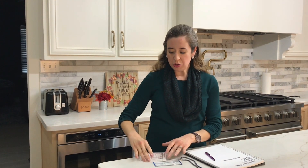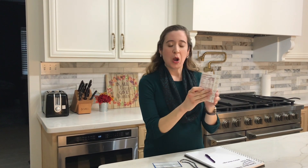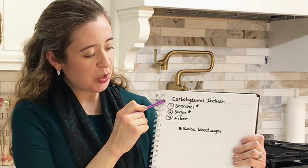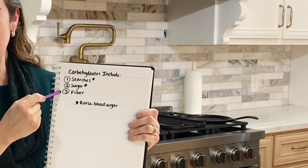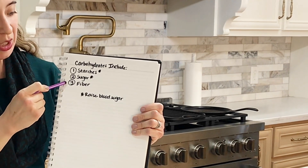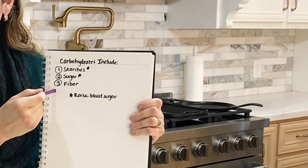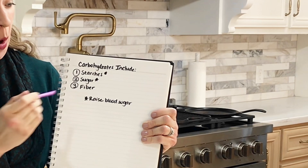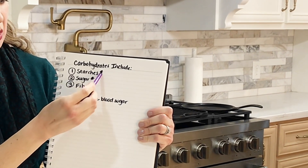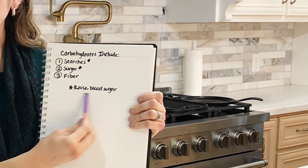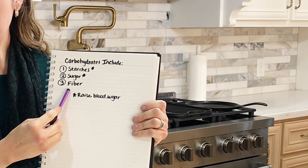So the more carbohydrate that you eat, the higher your blood sugar goes. Remember the sugars on the nutrition label are included in the total carbohydrate. Carbohydrates include sugars, they also include starches and fiber. Guess what? Only the starches and sugars actually raise your blood sugar — the fiber does not.